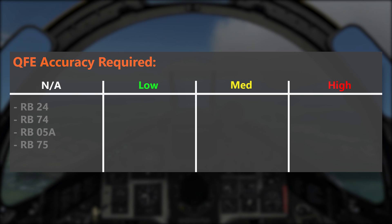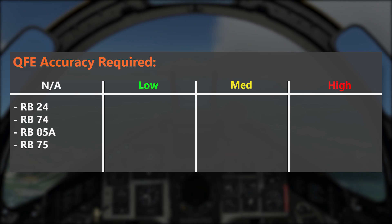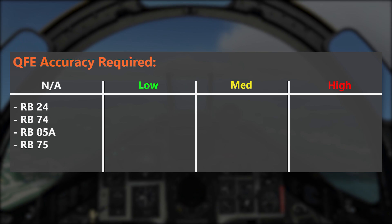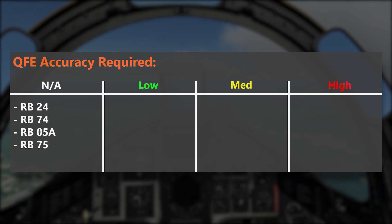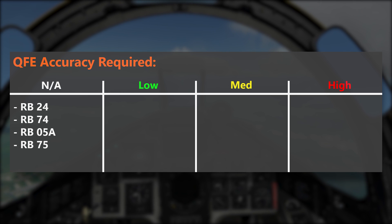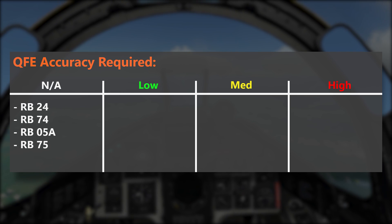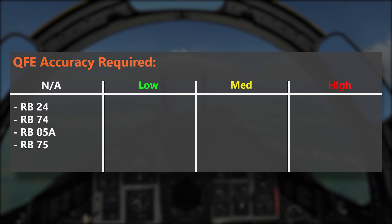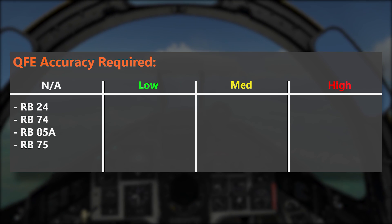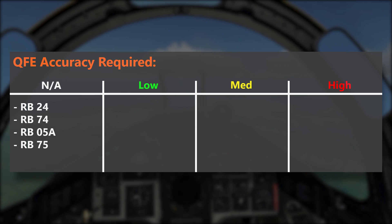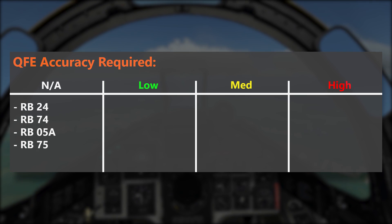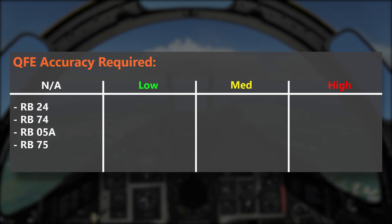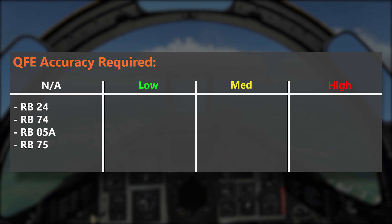Weapons like the RB24 and RB74 air-to-air missiles that are IR-guided don't need any QFE setting because they don't care about target altitude directly. Neither do the RB05A nor the RB75 need a QFE setting. They can be launched from any altitude and both are either manually or optically guided, so QFE doesn't really matter — if you have line of sight to the target, you can fire those weapons from any altitude.